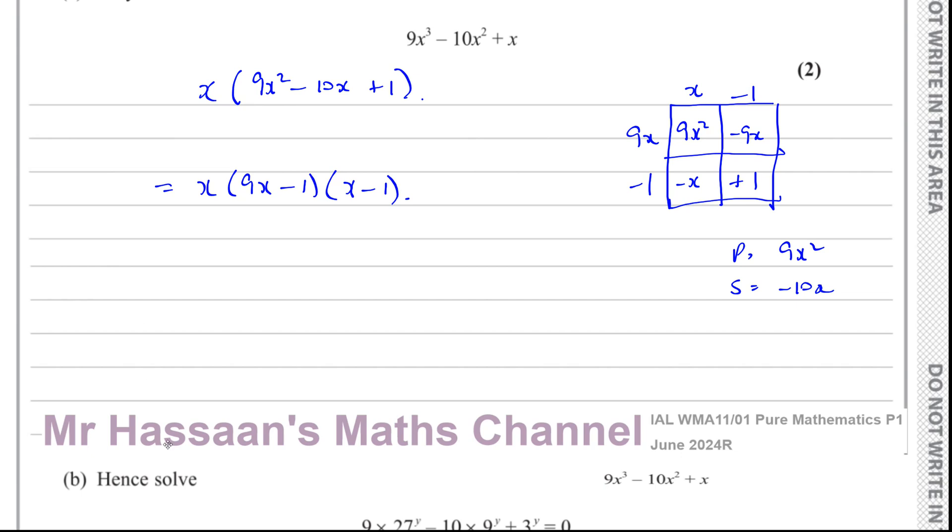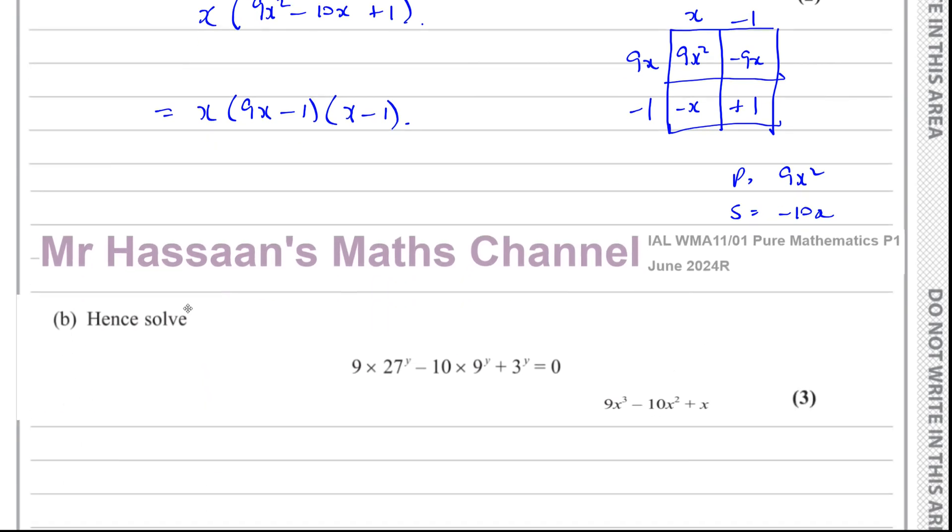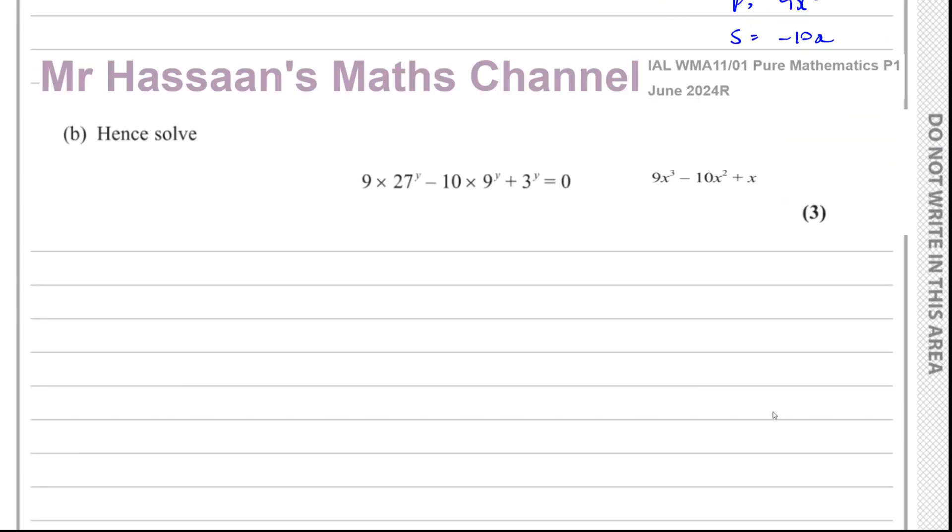Now for part b, it says hence. What does hence mean? Well, hence means using what you have just worked out. Solve this equation. So what we can see here. Hence, whenever you see hence, always look at what you were given. And what we're given is something that looks like this. And you compare it to what we have here.